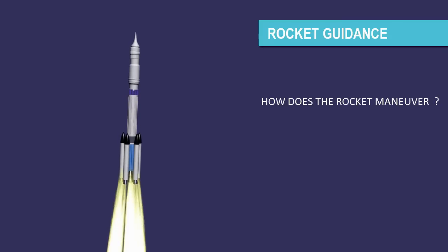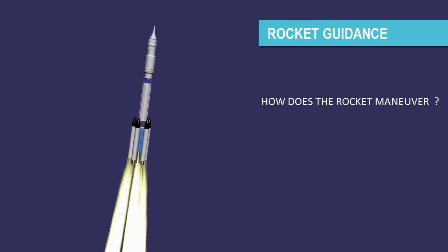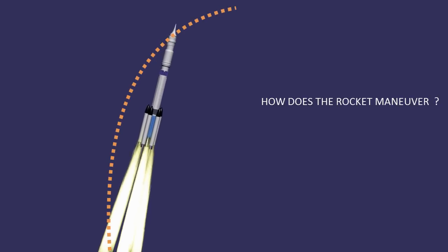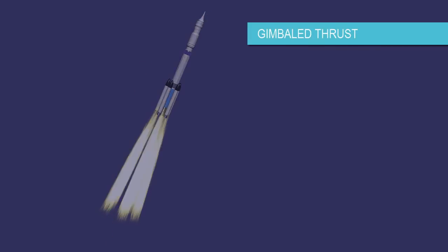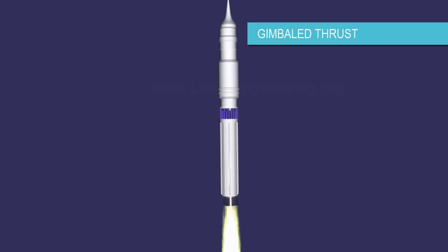You might be wondering how the rocket is able to maneuver itself to reach its destination. The most modern and common technique is called Gimbal thrust. Here, the rocket nozzle is tilted by high-precision devices.